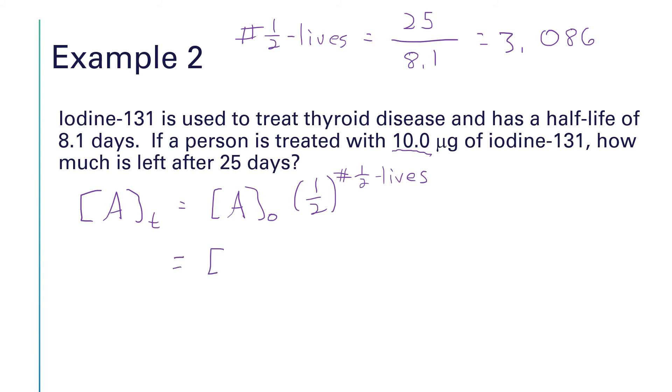So A0 is equal to those 10 micrograms, and then we're going to have 1 half raised to the 3.086. So I'm going to have 10 times 0.5 raised to the 3.086, and that's going to be 1.18 micrograms.